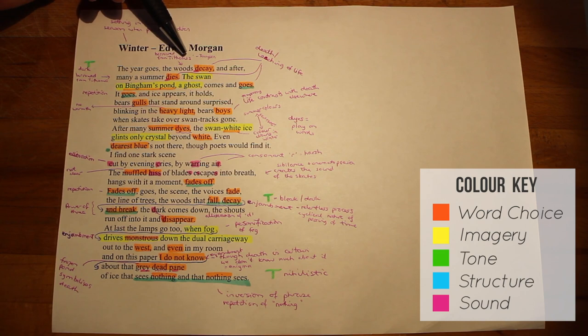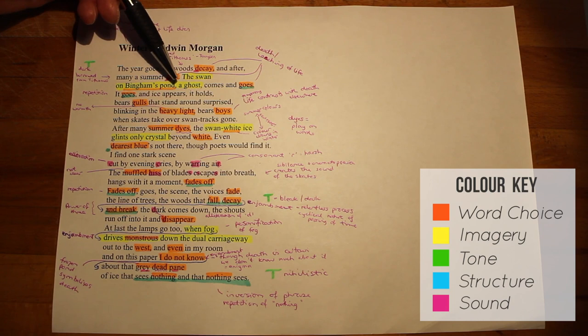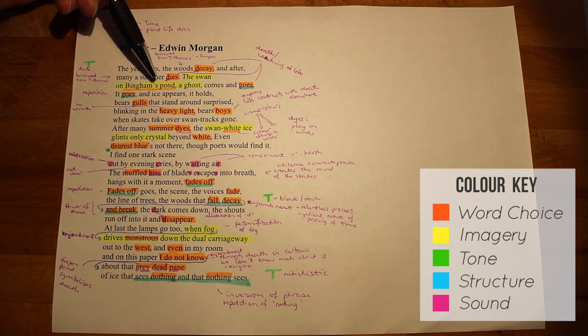The imagery of the swan is interesting. Normally a swan might be seen as something positive. However, here it is compared to a ghost and therefore there's the suggestion that it haunts Bingham's Pond. Bingham's Pond is actually a place in Glasgow, so this helps to establish the setting firmly.